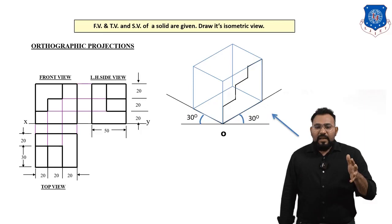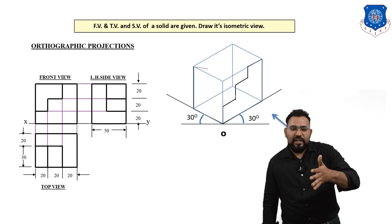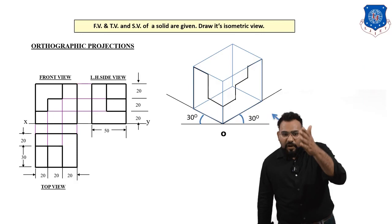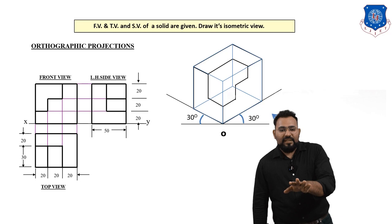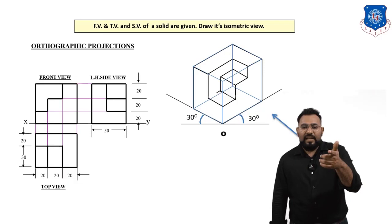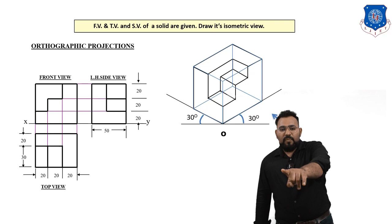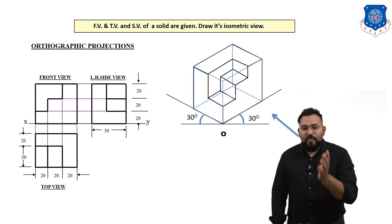Next, draw the left-hand side view and top view according to the 2D drawings given. Draw the left-hand side view as shown, then the top view. Then extend the edges and connect all the edges to complete the 3D object. The front view, top view, and left-hand side view of this developed 3D object will look exactly like the original 2D drawings provided.